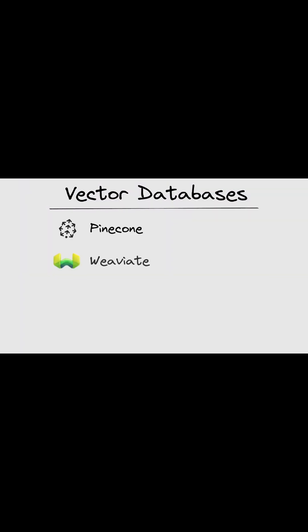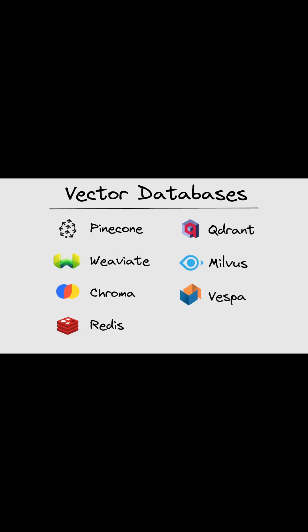There are a number of vector databases available. For example, we have Pinecone, Weaviate, Chroma, Redis also has a vector database, Qdrant, Milvus, or Vespa AI.